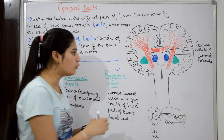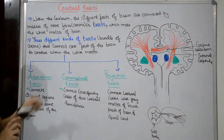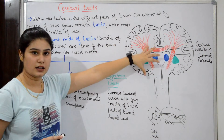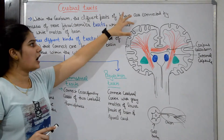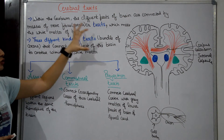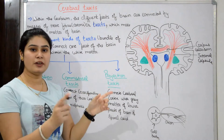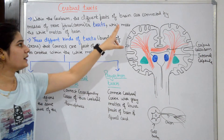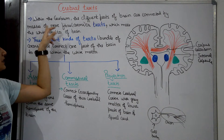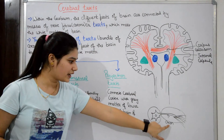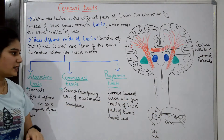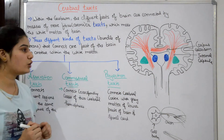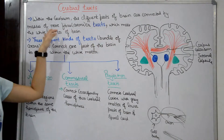In the outer region, gray matter is present, and in the inner region, white matter is present. So what are the cerebral tracts? Within the cerebrum, the different parts of the brain are connected by masses of nerve fibers. These bundles — masses of many axons — are called tracks, which make up the white matter of the brain.